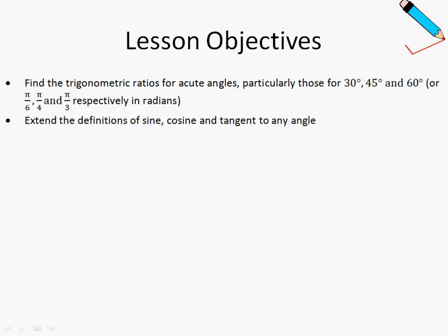Here are the lesson objectives for this video. We want to find the trigonometric ratios for acute angles, particularly those of 30 degrees, 45 degrees, and 60 degrees. And we will extend the definitions of sine, cosine, and tangent to any angle.